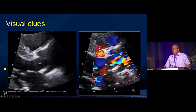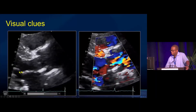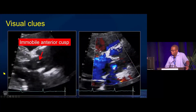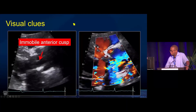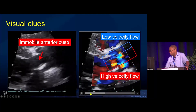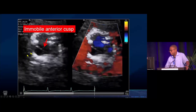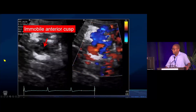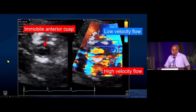Part of the evaluation of this prosthesis is that you should get clued in on some of the visual clues of bioprosthesis dysfunction, either thrombosis or degeneration. If you pay close attention, you can see that the anterior cusp of this tissue prosthesis is not moving as well as the posterior cusp. Flow across the valve shows the anterior part has low-velocity flow and the posterior part is where most of the flow is going through — high-velocity flow. You can see the same thing in the short axis: reduced mobility of the anterior cusp and differential flow across the aortic valve prosthesis.